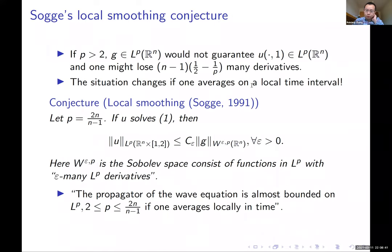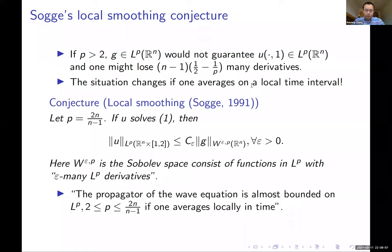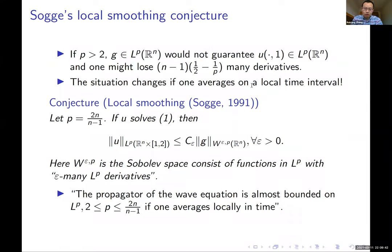There's an interesting phenomenon: when p is bigger than 2, a fixed-time estimate may lose L^p derivatives as you move away from L^2. But if you average over a local time interval, this might change. Let's say our time interval is between 1 and 2 — I'm not cheating by taking t=0. Sogge had this observation and made a conjecture in 1991.